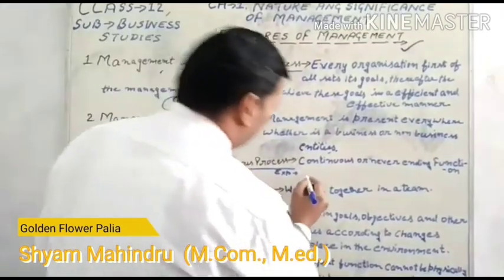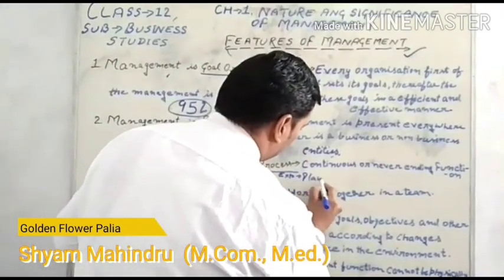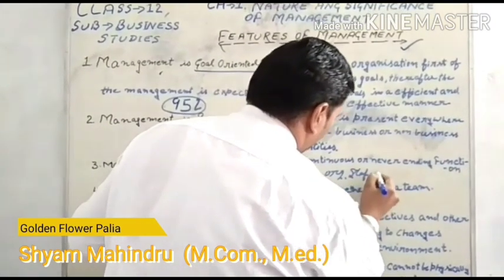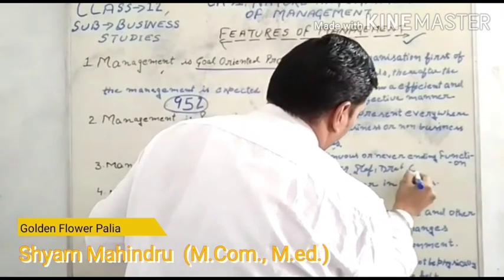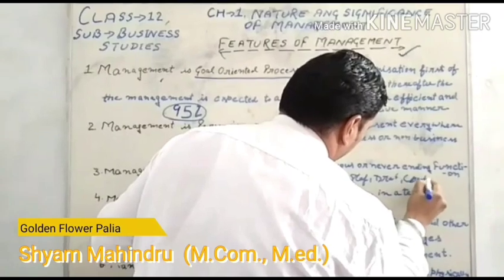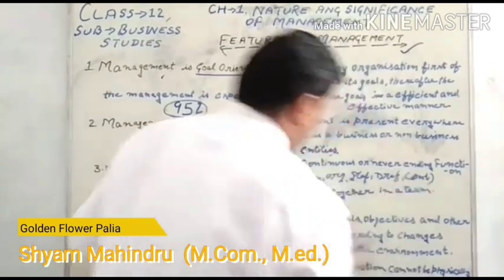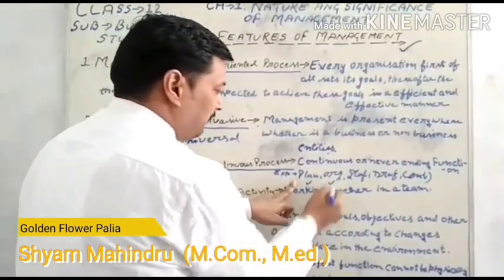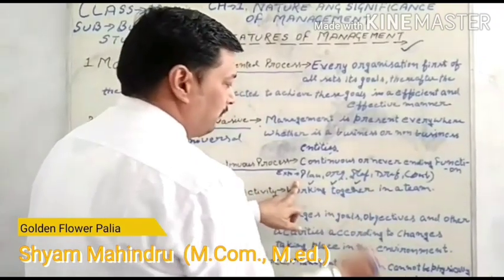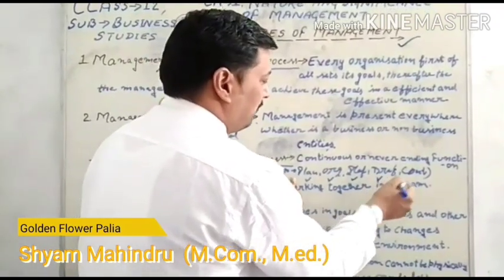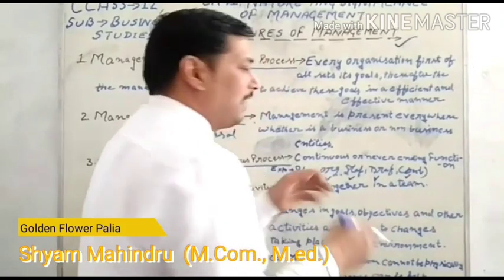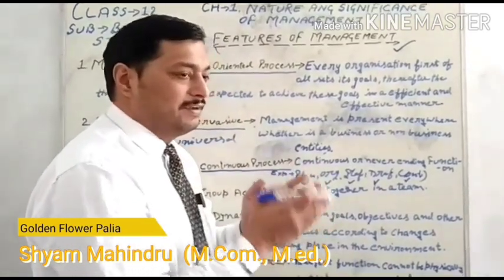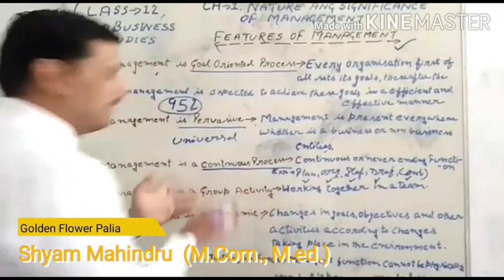The management function starts from planning, then organizing, then staffing, then directing, and then controlling. After controlling, again they will do planning. So as long as the organization is alive, management will be continued — it is a cycle that never stops.